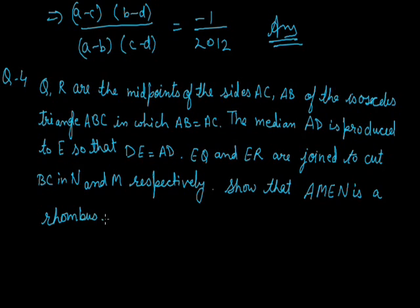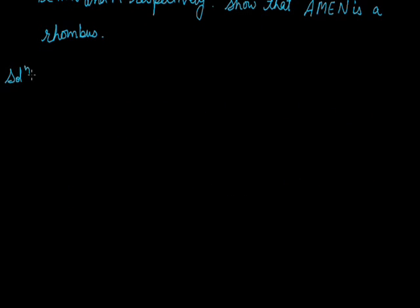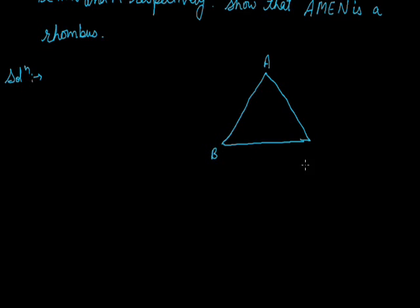We have to show that the quadrilateral AMEN is a rhombus. Let's start the solution. First of all we will draw the diagram — this is triangle ABC with points R and Q on the sides.